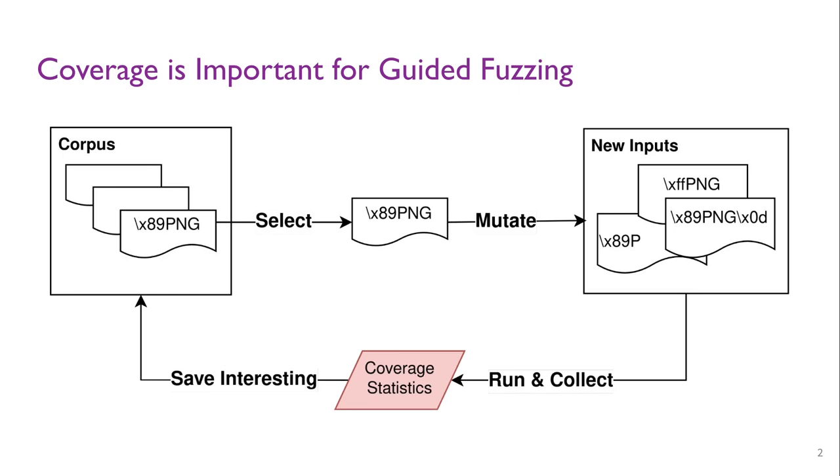Coverage guidance is important to improve fuzzing efficiency because it helps to prioritize interesting inputs in the corpus and discard inputs that do not reach any new program states. Generally speaking, the coverage guideline of fuzzers consists of two stages: collecting coverage at runtime and analyzing for interesting inputs after the completion of executions.